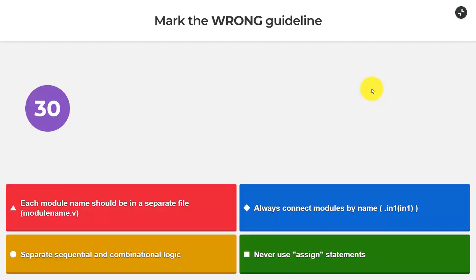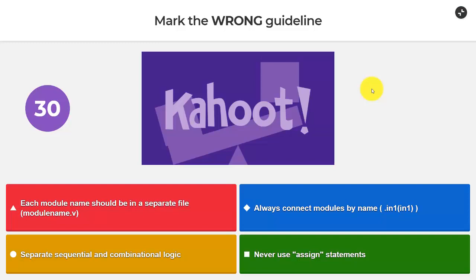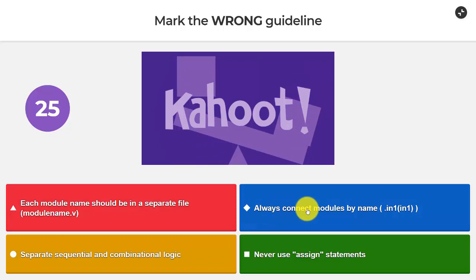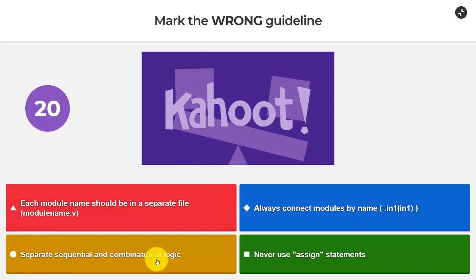Question 7: mark the wrong guideline. Options: each module name should be in a separate file; module_name.v; always connect modules by name — dot notation — dot in1 gets in1; separate sequential and combinational logic; never use assign statements. That last one is pretty obviously wrong — I showed you assign statements and there's no reason not to use them.